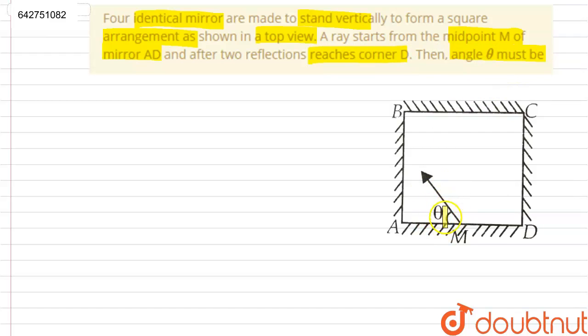We're asked to find out the angle theta if the ray started from M point and reflected on these two surfaces and then reached the D point. To understand this question better we need to make some changes to the diagram.